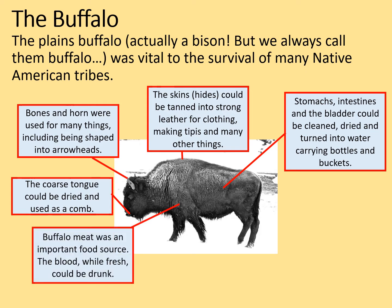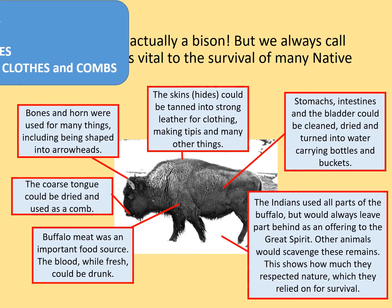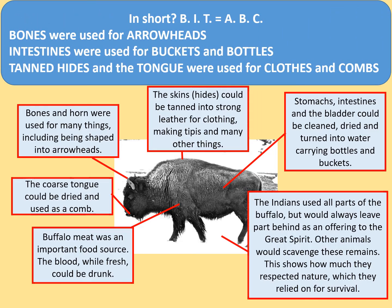Buffalo meat was an important food source. The blood, while fresh, could be drunk. The Indians used all parts of the buffalo, but would always leave something behind for the Great Spirit as an offering. Other animals would scavenge these remains. It shows how much the Plains Indians respected nature, which they relied upon for their survival. In short, it equals ABC: the bones were used for arrowheads, intestines were used for buckets and bottles, and tanned hides or the tongue could be used for clothes and combs — a handy way of remembering the main uses of the buffalo. These were large, dangerous and powerful animals; hunting them was risky, but they became incredibly skilled in bringing them down.